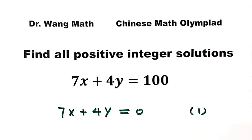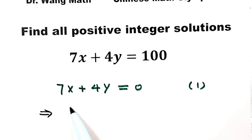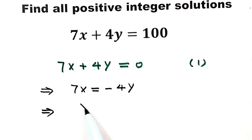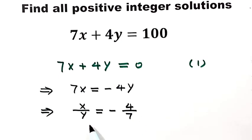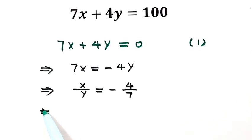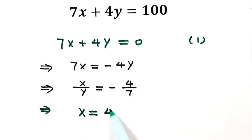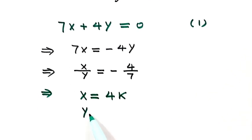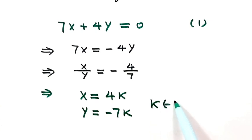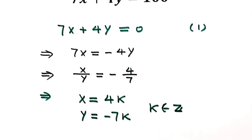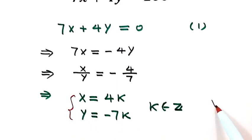Now let's rewrite the equation. Then 7x equals negative 4y, so x over y equals negative 4 over 7. From here, we have a general solution for this homogeneous equation: x equals 4k, y equals negative 7k, where k is any integer. This is the general solution, and we'll label it as solution one-star.